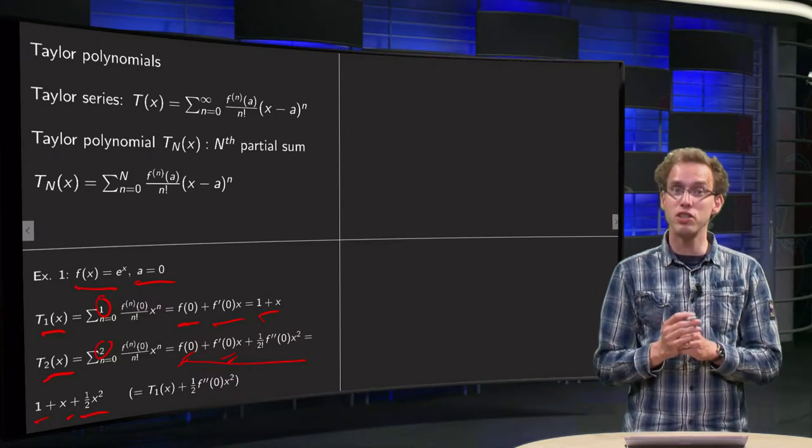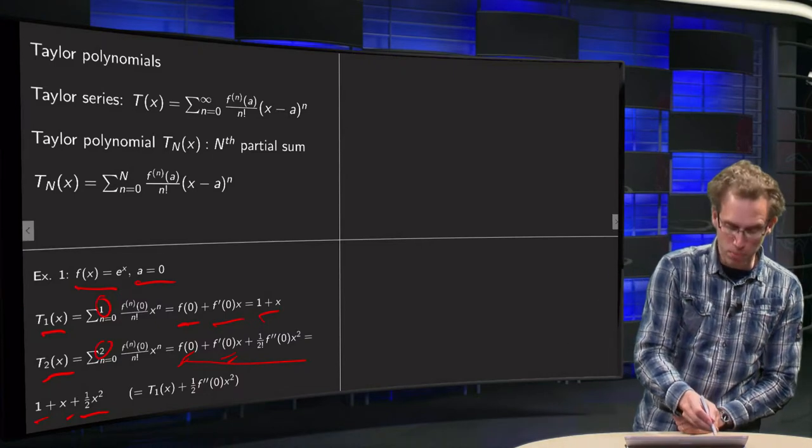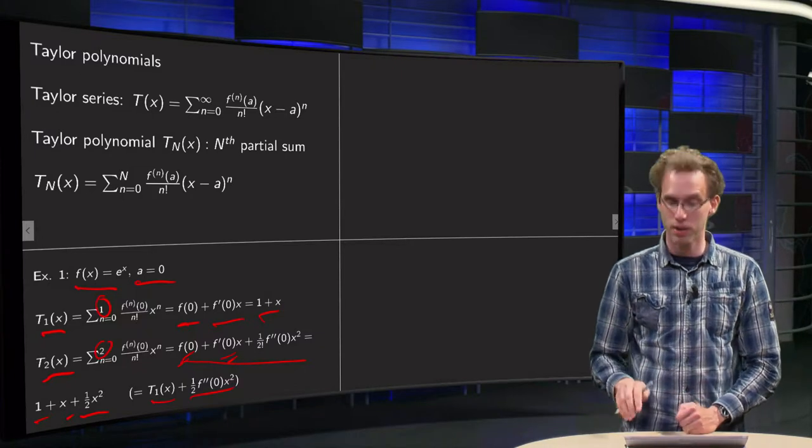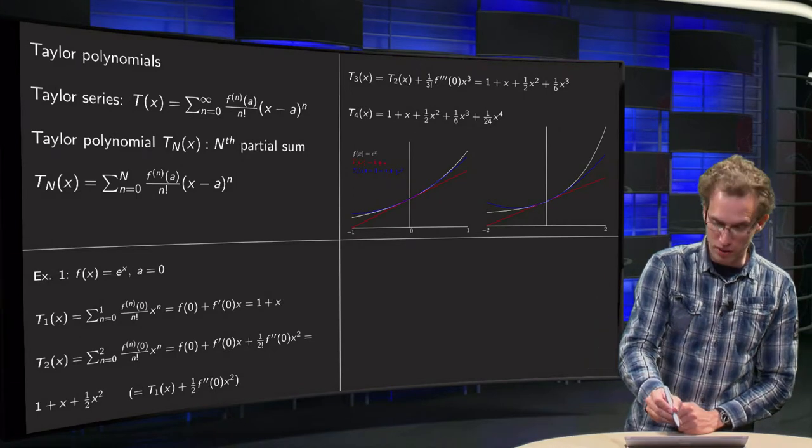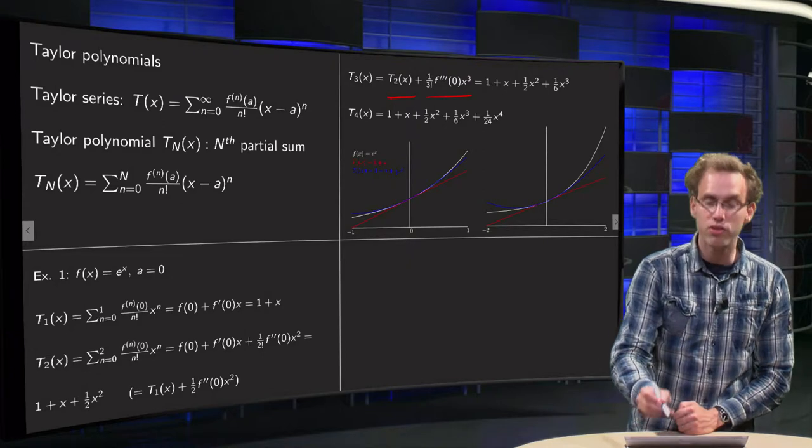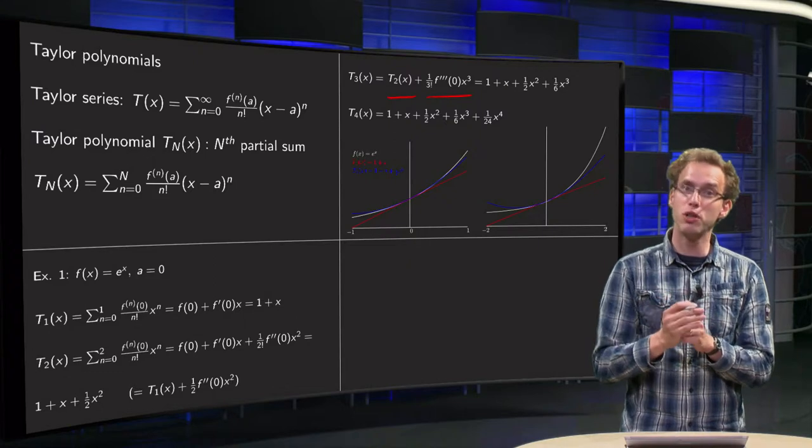So there we have our T2. And you notice that if you continue like this, that your T2 is in fact your previous one T1 plus the n equals two term. So that's how we will compute the T3. T3 of x third Taylor polynomial is just the second plus the n equals three term, which equals one over three factorial, third derivative in zero times x cubed.